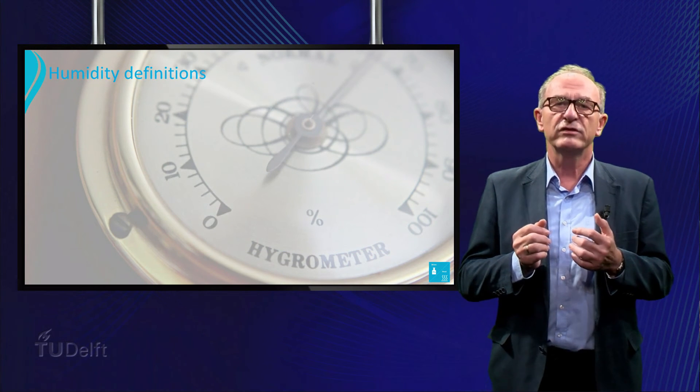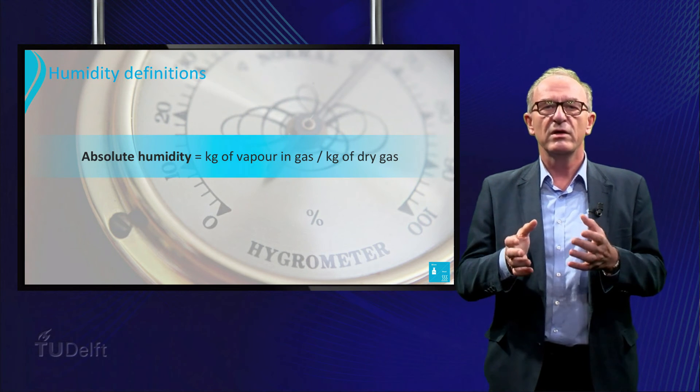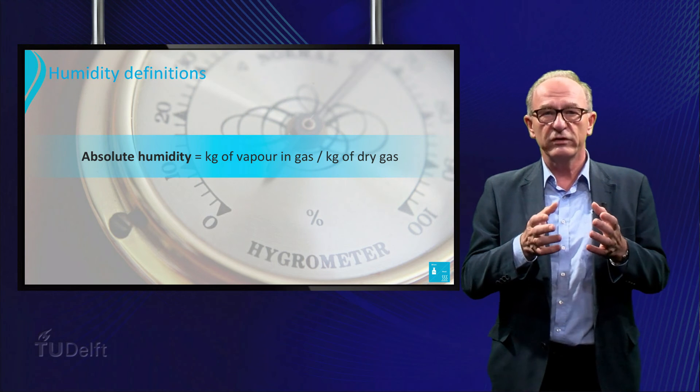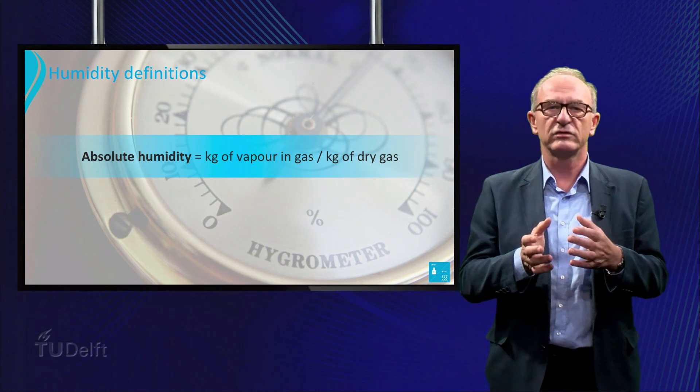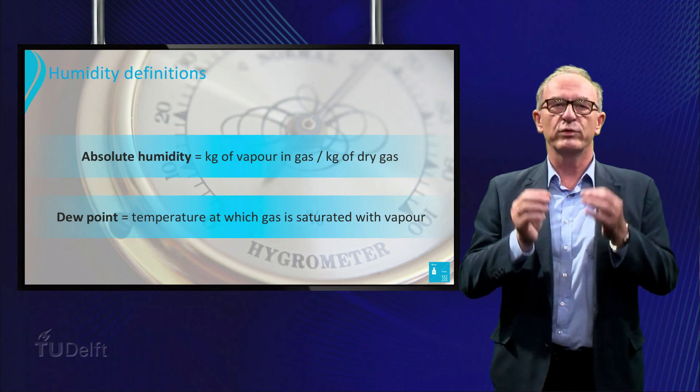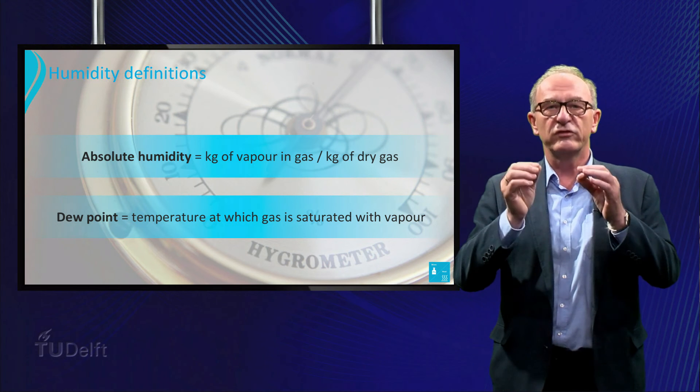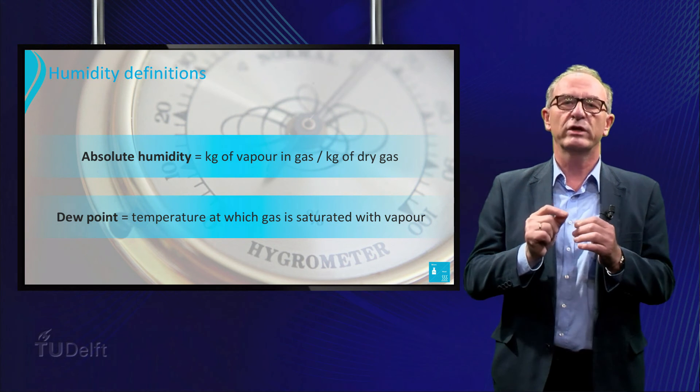In many drying and humidity-related fields, we also speak about the absolute humidity, which is defined as kilograms of vapor in a gas per kilogram of dry gas, and the dew point, which is the temperature at which condensation starts when humid gas is cooled down - or in other words, the temperature at which the gas is saturated with vapor.